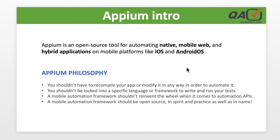Appium can automate any mobile application without changing its originality or source code - that is the first philosophy. The second philosophy says we shouldn't be locked to a specific language or framework. Appium is not limited to one language; just as Selenium supports Java, Python, .NET, Ruby, and JavaScript, Appium is also spread across the most popular languages in the market.